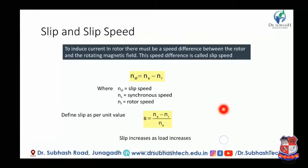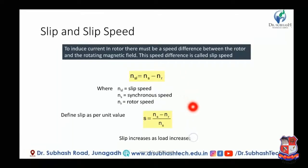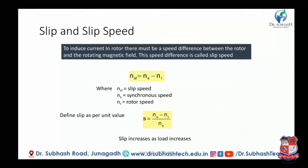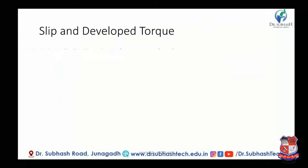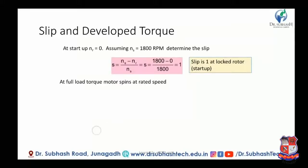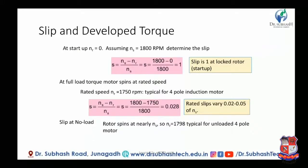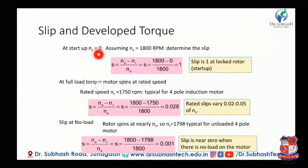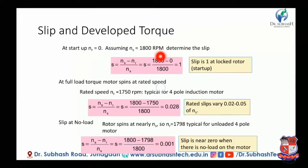The slip increases as the load increases. In starting condition, the rotor speed is 0, so slip equals 1. Assuming Ns is equal to 800 rpm or 1200 rpm, the slip definition is: slip = (rotating magnetic field speed − rotor speed) / rotating magnetic field speed.